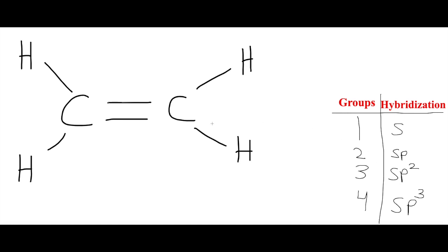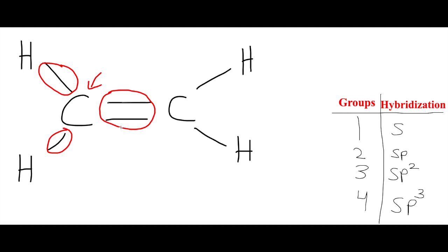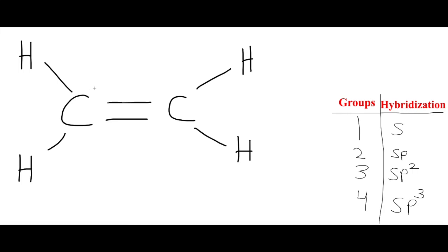So what does this mean? It means that if you look at the first carbon, it's connected to how many bonds? We've got one, two, and three — that's three bonds. Three bonds is three groups, which would be SP2. So this first carbon is SP2.